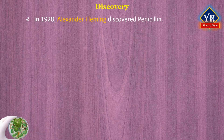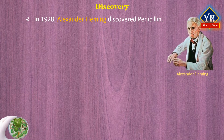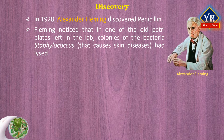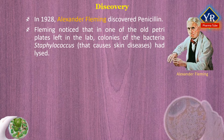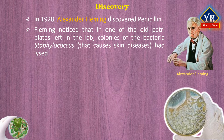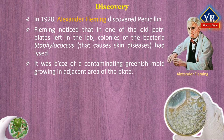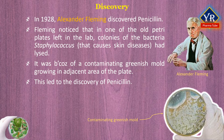In 1928, Fleming made his second antibacterial discovery and that was penicillin. Most people have heard about this story about the discovery of penicillin. Fleming noticed that in one of the old petri plates left in the laboratory, colonies of the bacteria Staphylococcus, which causes skin diseases, had lysed. It was probably because of a contaminating greenish mold growing in an adjacent area of the plate. This led to the discovery of penicillin.